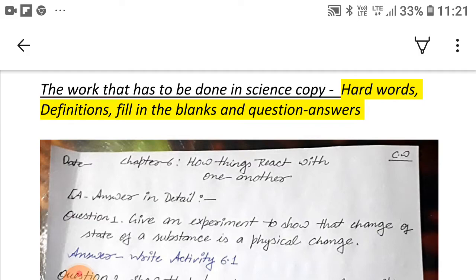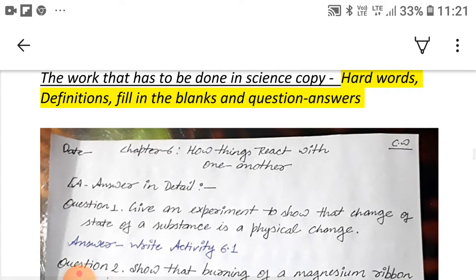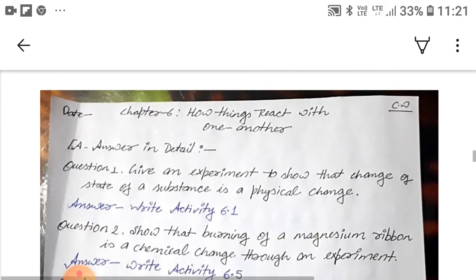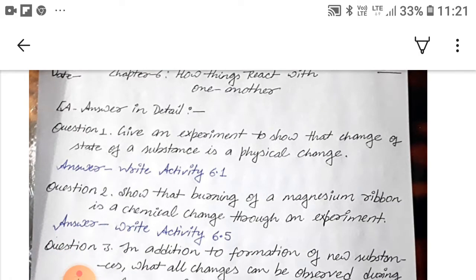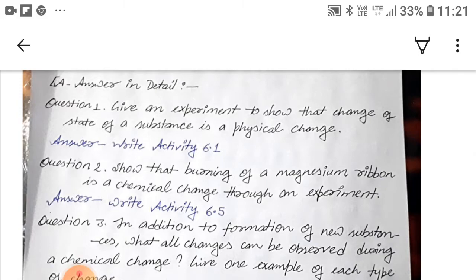Now, the work that has to be done in science copies. First you have to do hard words, then definitions, then fill in the blanks and question answers in your copy. So first you have to mention today's date, classwork, chapter number and name of the chapter, and then you have to put the heading answer in detail.